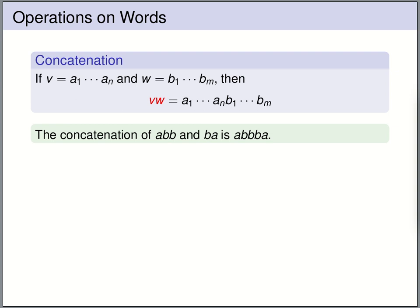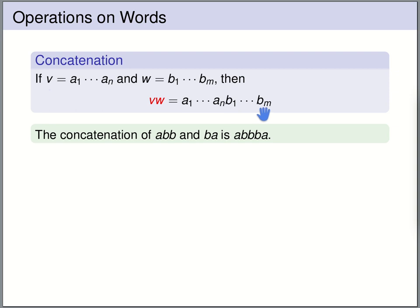Let's have a look at some basic operations on words. The first operation is concatenation. If you are given a word v consisting of letters a1 up to an, and the word w consisting of letters b1 up to bm, then the concatenation of v and w, denoted by vw, consists of the letters a1 up to an followed by b1 up to bm. For instance, the concatenation of abb and ba is the word abbba.